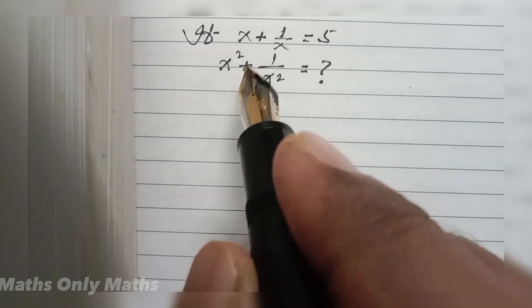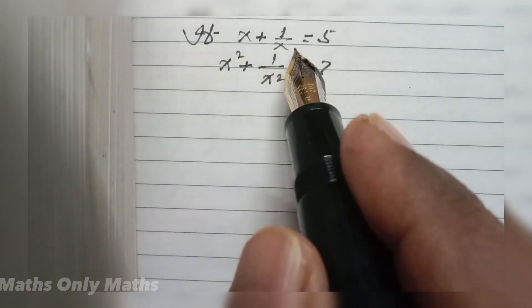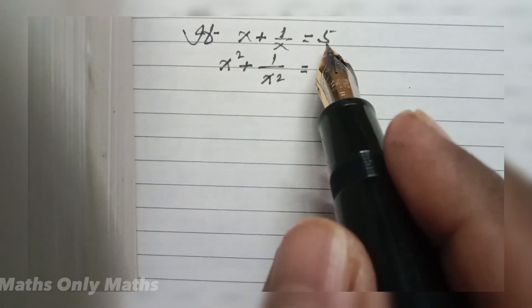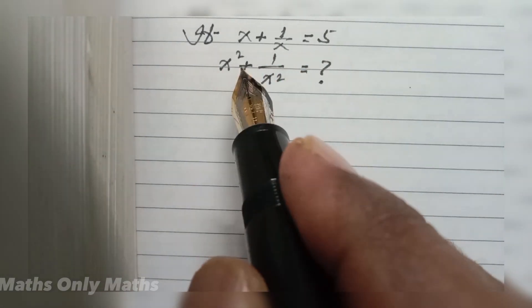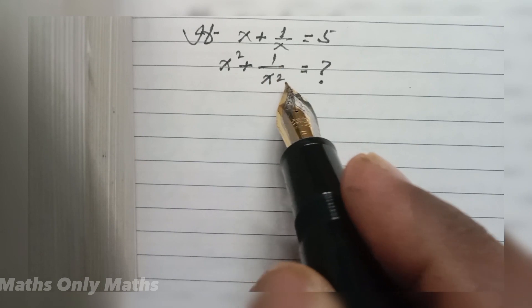If x plus 1 by x equals 5, what is the value of x square plus 1 by x square?